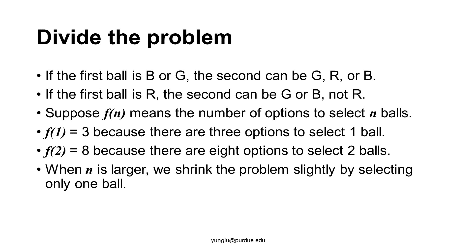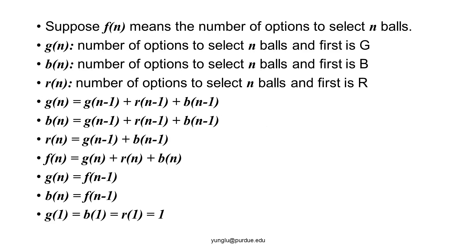When N is large, instead of trying to solve the problem directly, we solve it by making it slightly smaller. We can solve this problem by further dividing it into three smaller problems. Let's define G(N) as the number of ways to select N balls where the first ball must be green. B(N) is the number of ways to select N balls where the first ball must be blue.